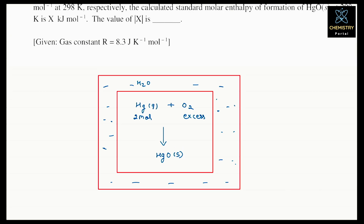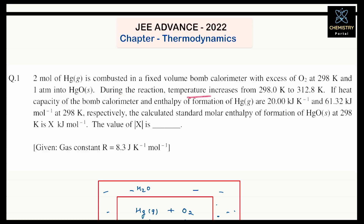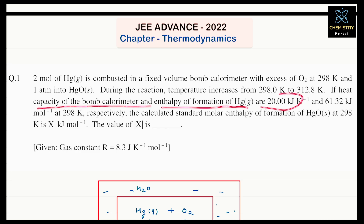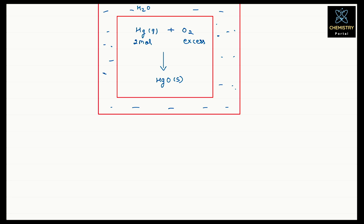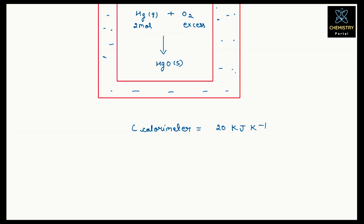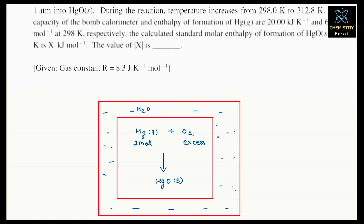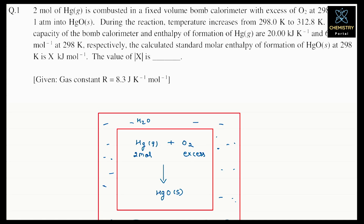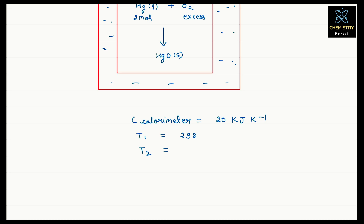After the reaction, the temperature increases from 298 to 312.8 Kelvin. The heat capacity of the bomb calorimeter is given as 20 kilojoule per Kelvin. So T₁ is 298 Kelvin and T₂ is 312.8 Kelvin.